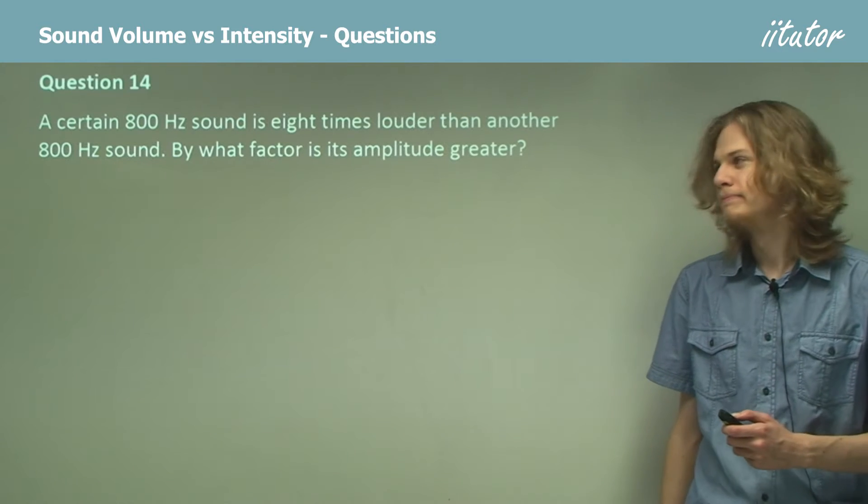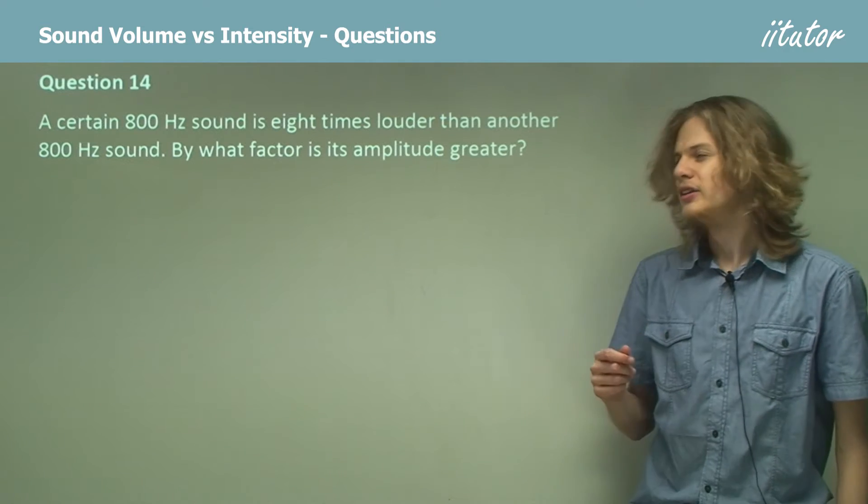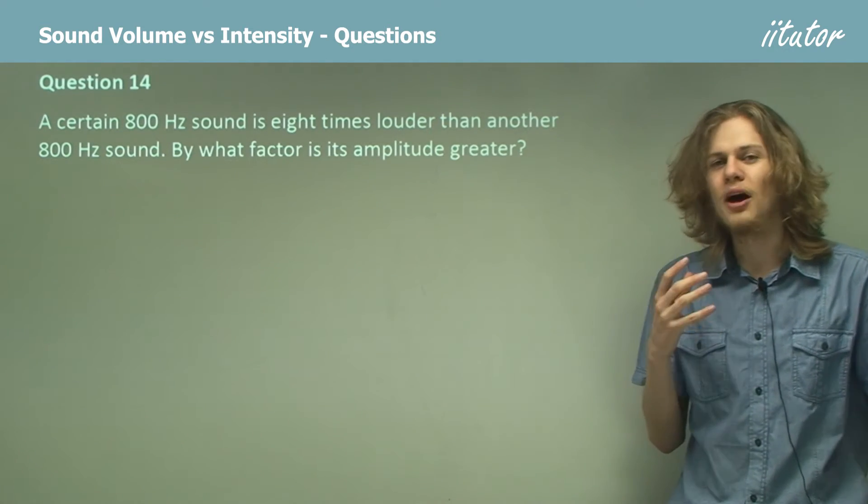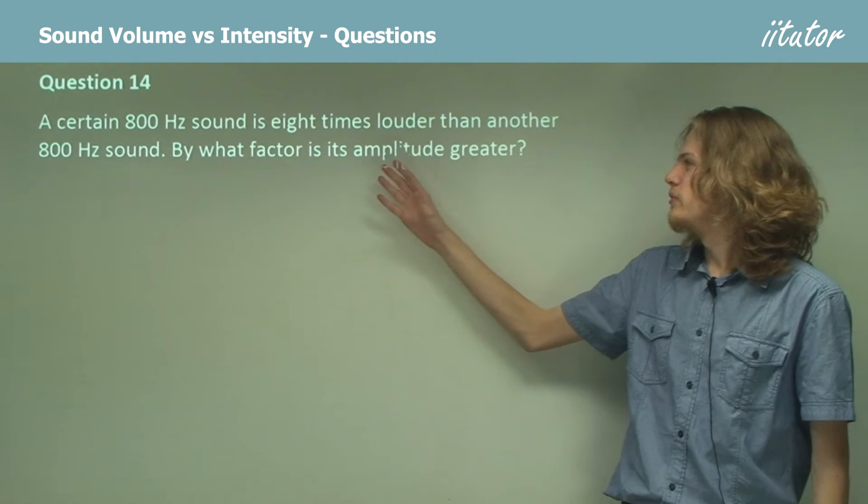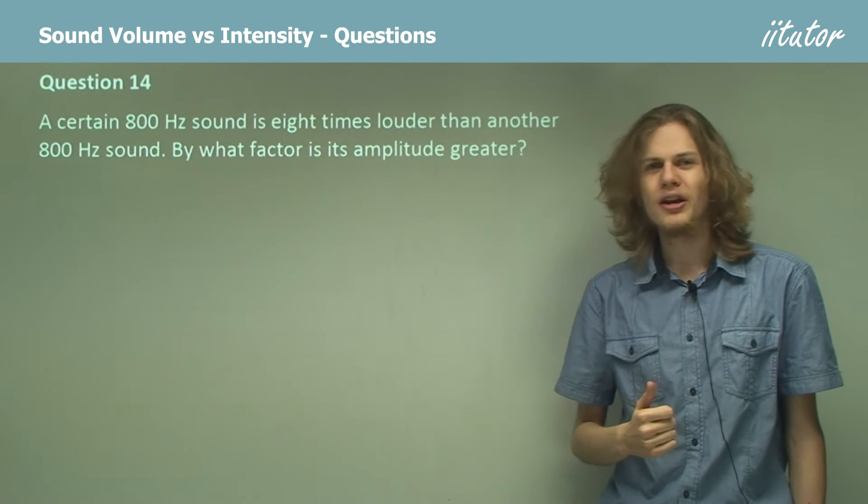Question 14. A certain 800 hertz sound is 8 times louder than another 800 hertz sound. Now, because the frequencies are the same, we don't need to worry about how they affect the volume. The sound is 8 times louder than the other sound. By what factor is its amplitude greater?